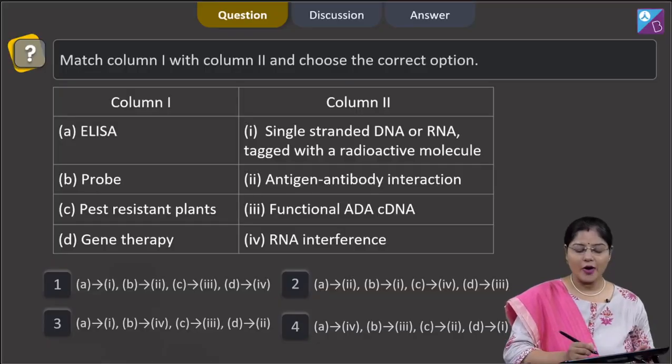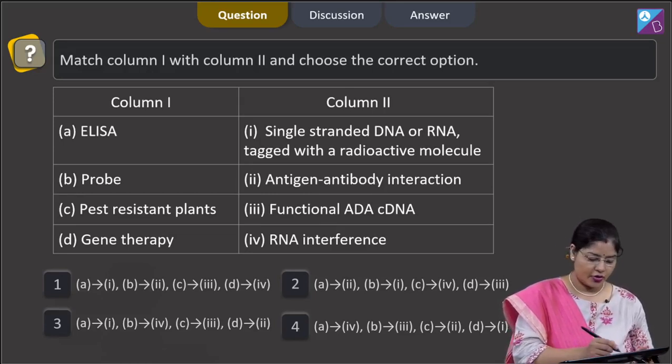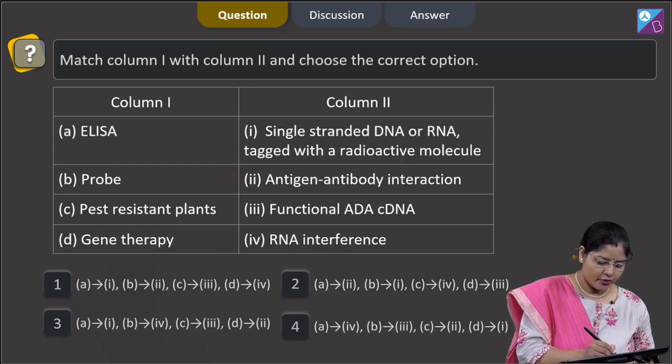Next question: match column 1 with column 2 and choose the correct option. Column 1, ELISA. ELISA stands for enzyme-linked immunosorbent assay and ELISA is based on antigen-antibody interaction. So A matches with 2.